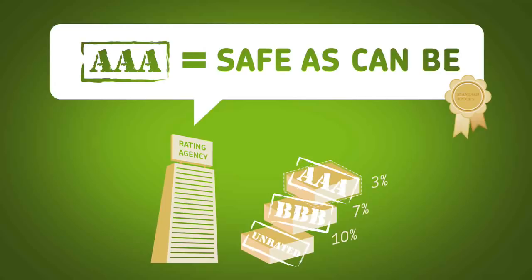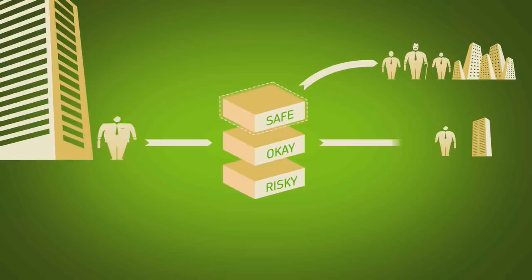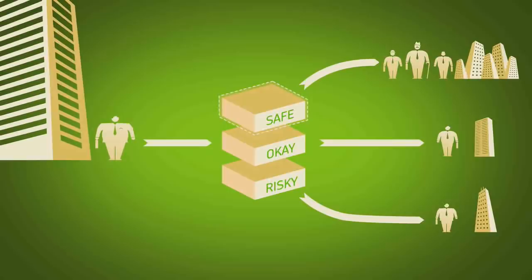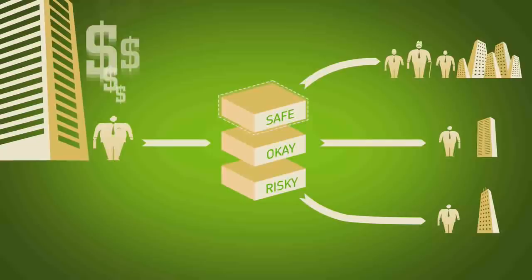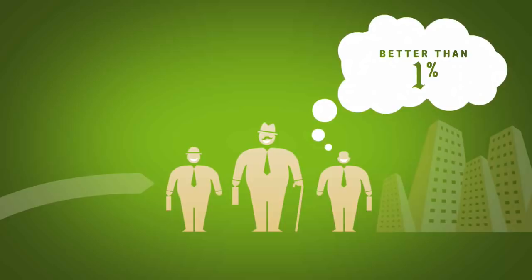Because of the triple-A rating, the investment banker can sell the safe slice to the investors who only want safe investments. He sells the okay slice to other bankers, and the risky slices to hedge funds and other risk-takers. The investment banker makes millions. He then repays his loans. Finally, the investors have found a good investment for their money, much better than the 1% Treasury bills. They're so pleased they want more CDO slices.